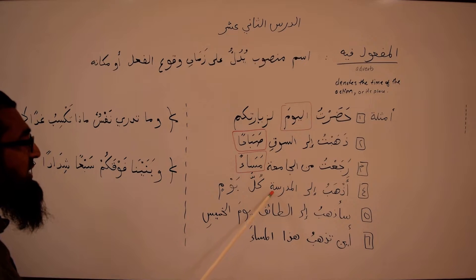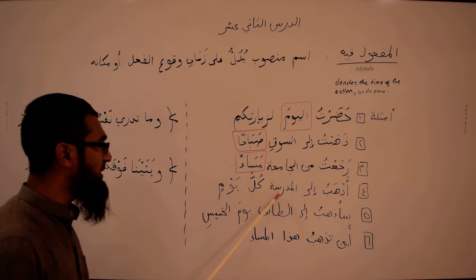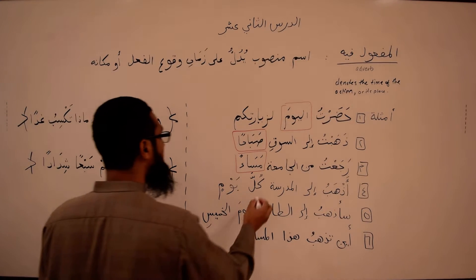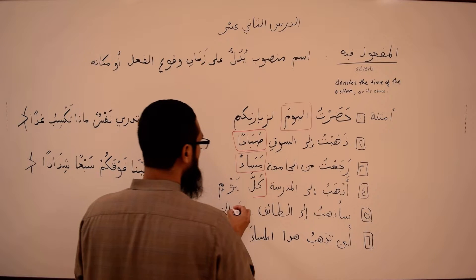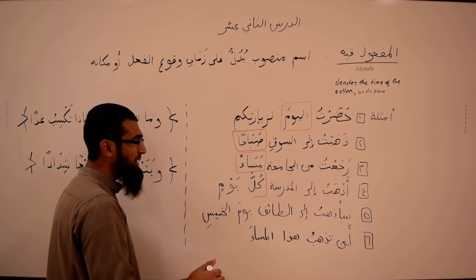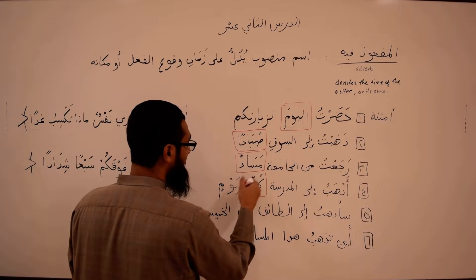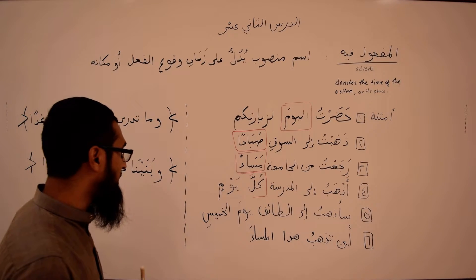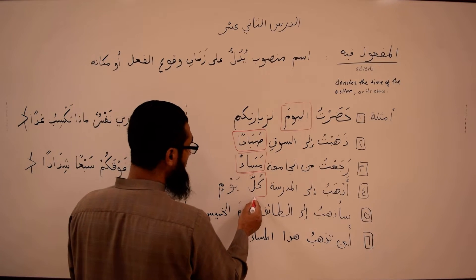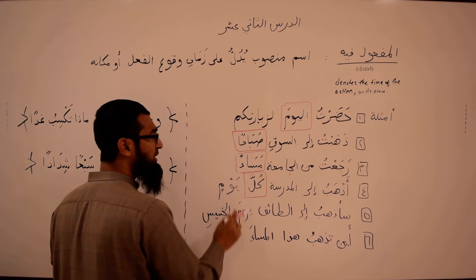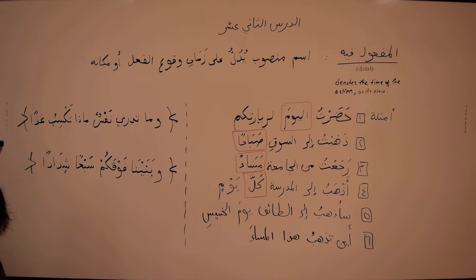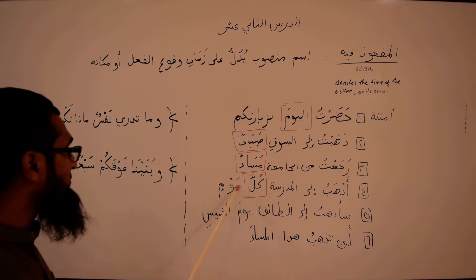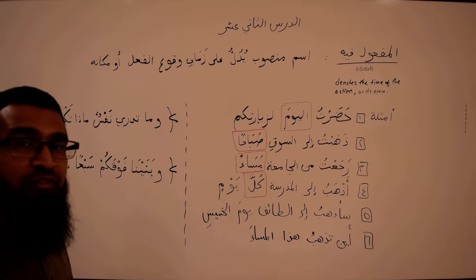Fourth example: أَذْهَبُ إِلَى الْمَدْرَسَةِ كُلَّ يَوْمٍ — I go to the madrasa every day. Even though you may want to say both words are the مفعول فيه, in reality it is always the مُضَاف that carries the weight of the إعراب. So كُلَّ is officially the مفعول فيه. But when do I go to the madrasa? كُلَّ يَوْمٍ — every day.